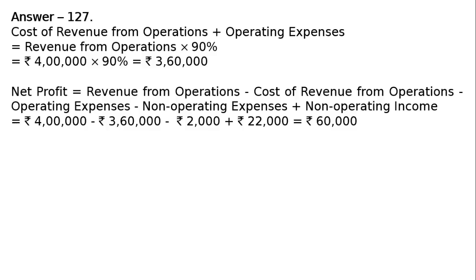Net profit ratio equals net profit upon revenue from operations multiplied by 100. That is rupees sixty thousand upon rupees four lakhs multiplied by 100, which equals 15%. This is the final answer.